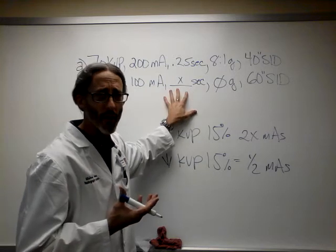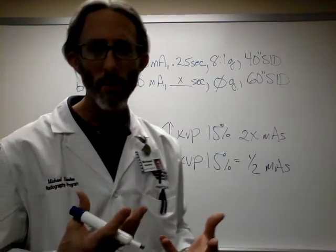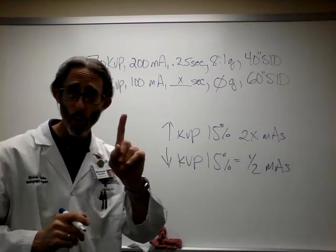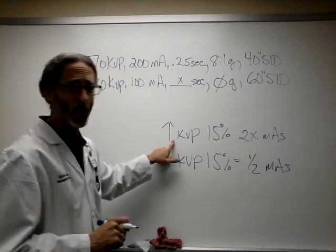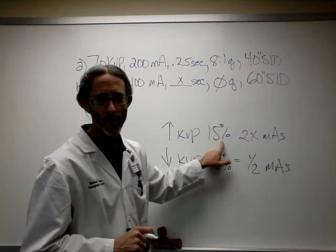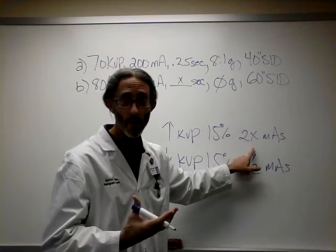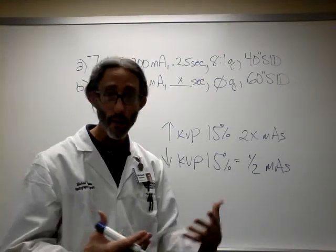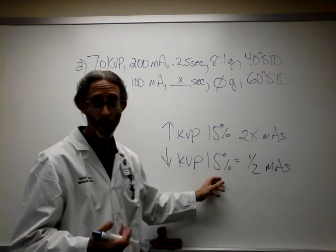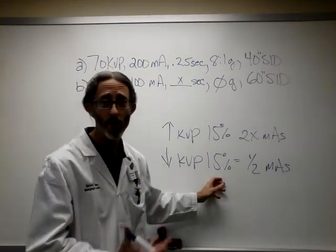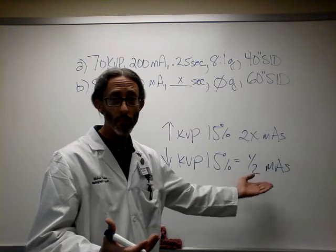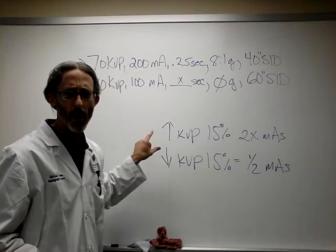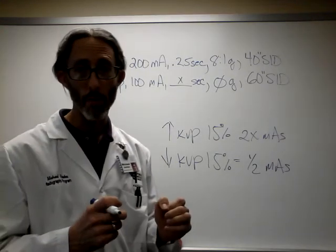How do we arrive at this unknown? How do we find that? Before we do, let's talk a little bit about the 15% rule. Quick review. An increase in kVp by 15% results in doubling the mass, or the equivalent result of doubling the mass. A decrease in kVp by 15% will give you the same result as if you reduced your mass by half.